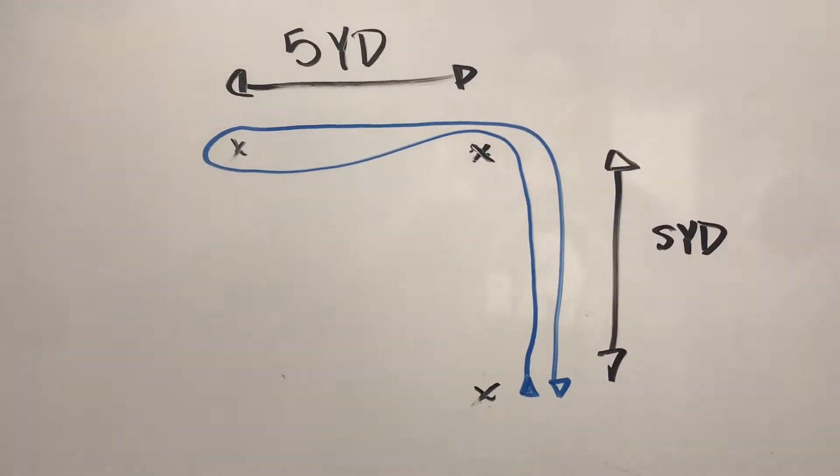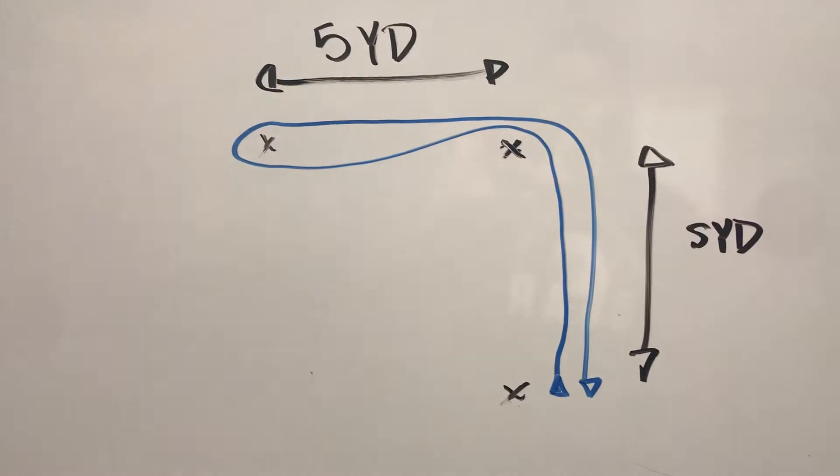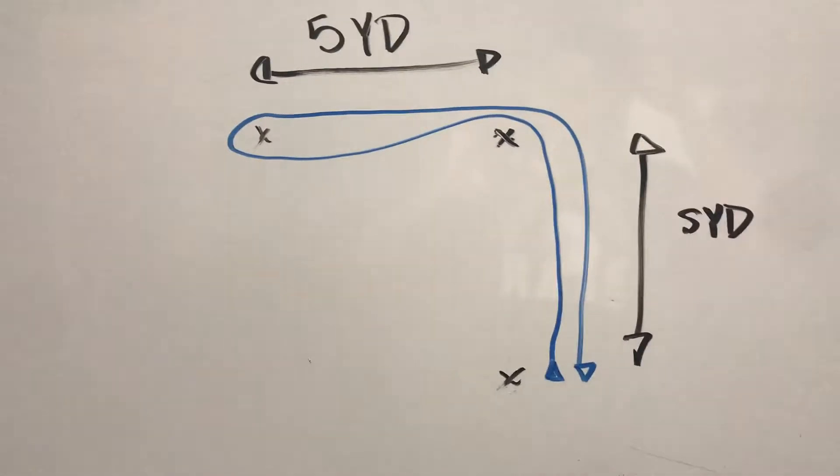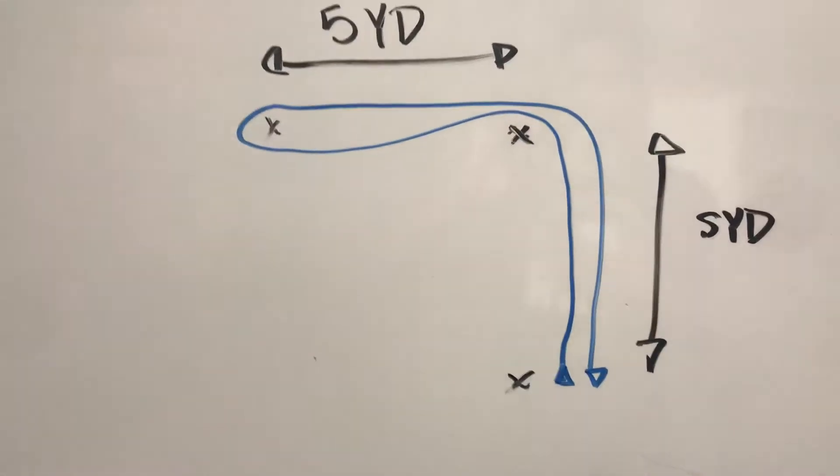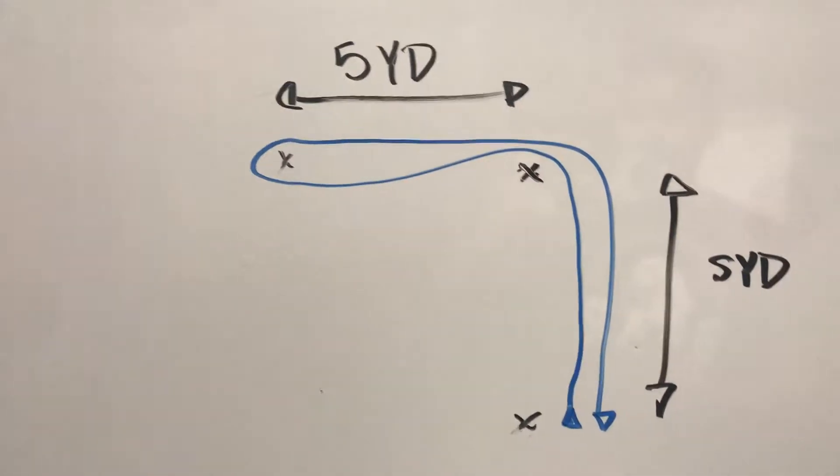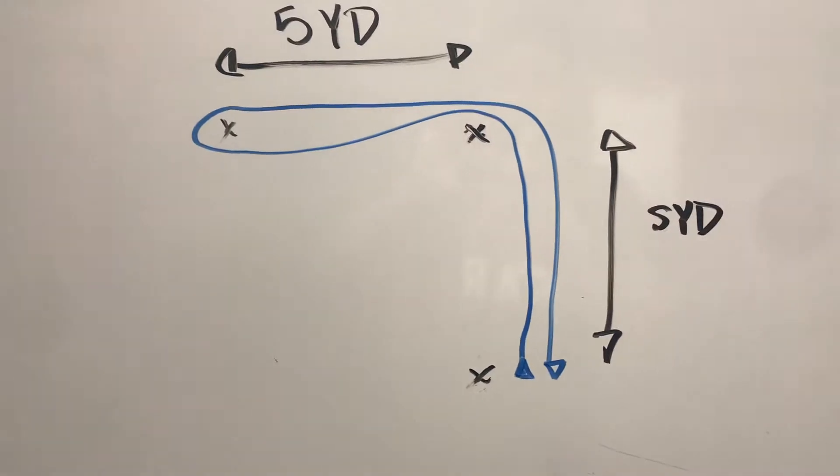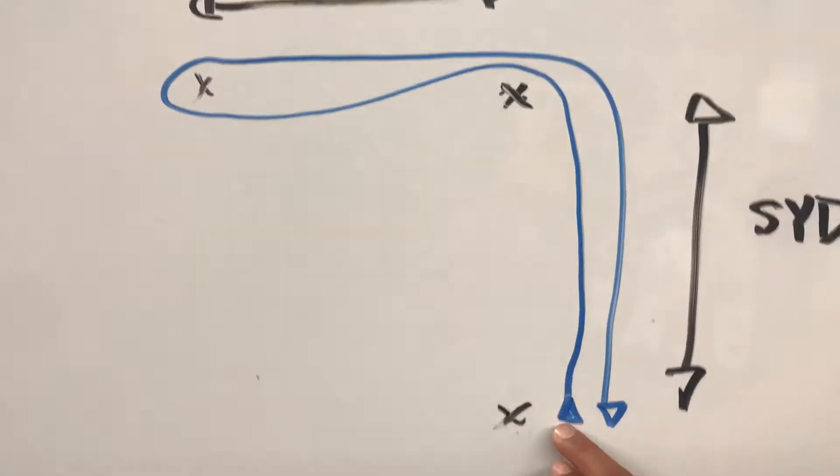This drill demonstrates their ability to accelerate, reaccelerate, change direction, and go around an object. You set up three simple cones, very easy, measured out five yards apart. You're gonna start on the outside of that first bottom cone.